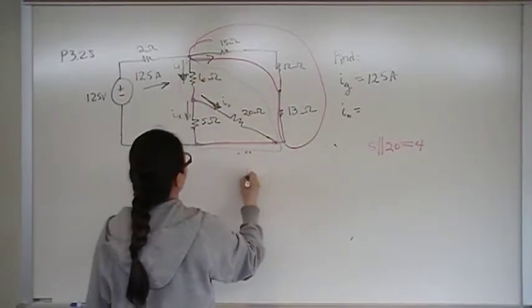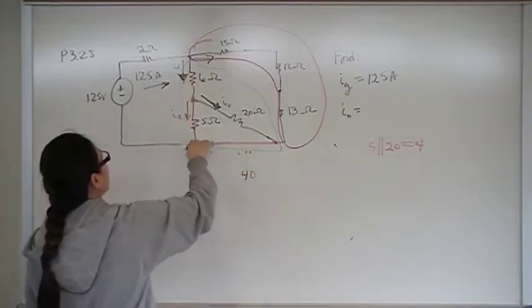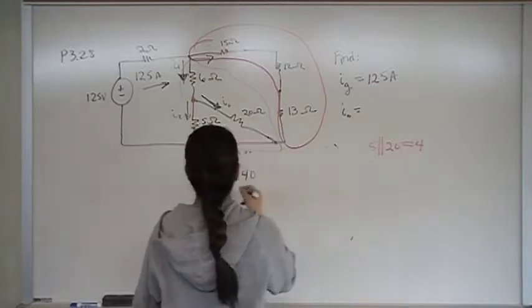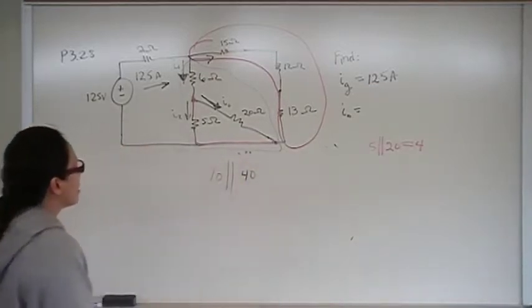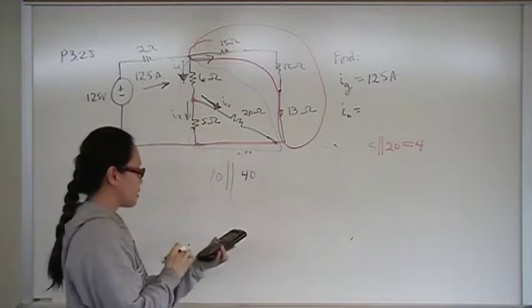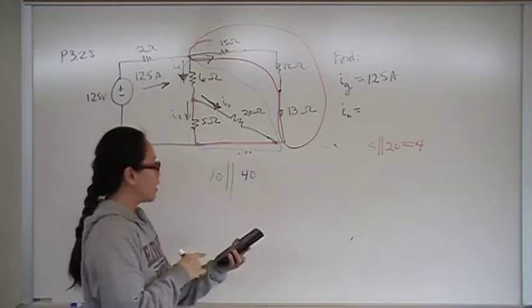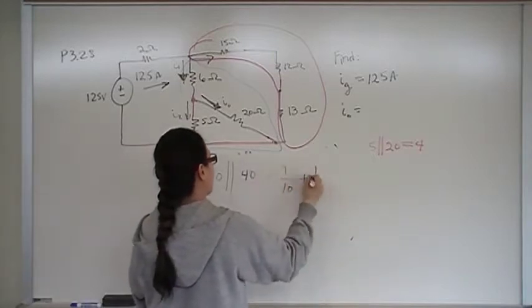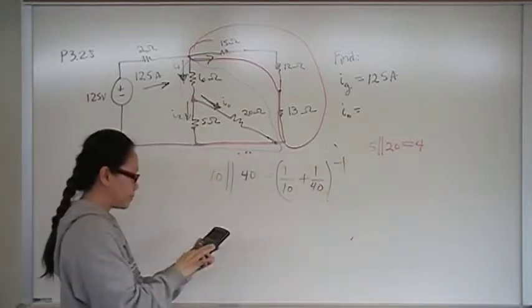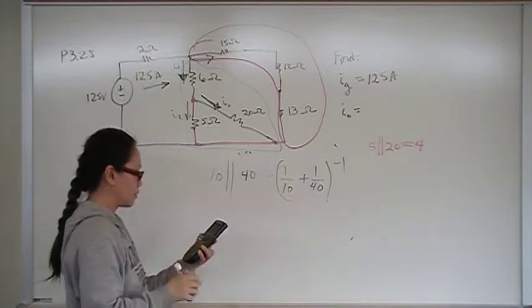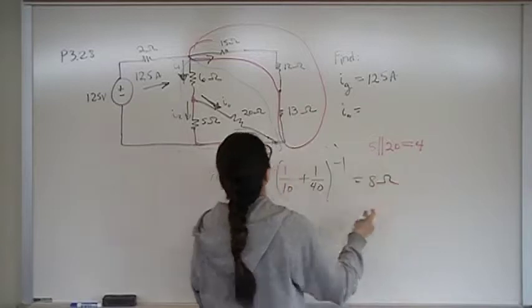So what is this branch? This branch here we said earlier was 40, and then this branch is going to be 6 plus 4, which is 10. So I have 10 in parallel with 40. The amount of resistance that this 12.5 amps sees on the on-ramp is going to be 1 over 10 plus 1 over 40, inverse that. We have 8 ohms equivalent resistance.